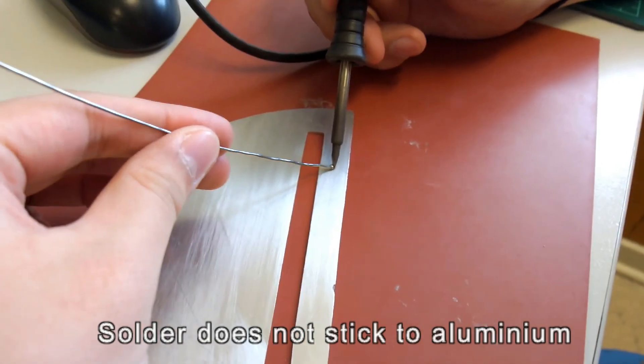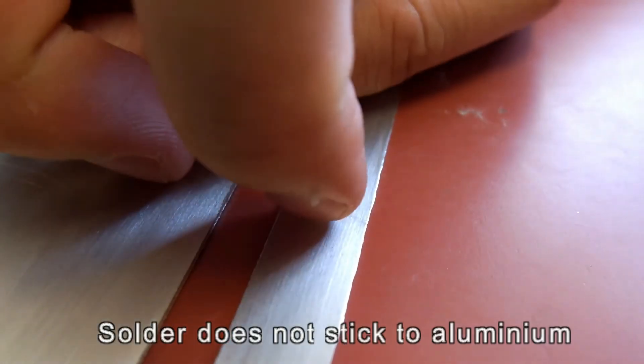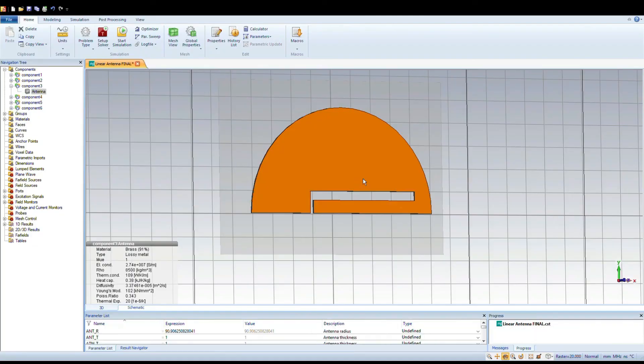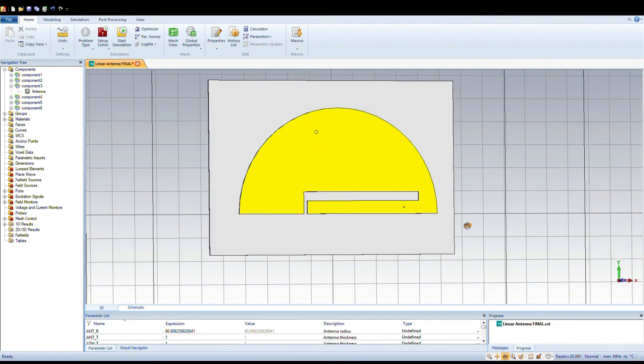There are many ways our project can be further improved and advanced in the future. Firstly, the semicircular antenna should be made of brass. It was fabricated with aluminum because of availability at university, and CST simulations show brass and aluminum gave the same results.